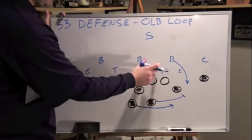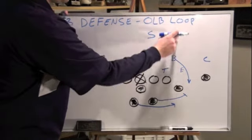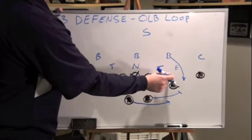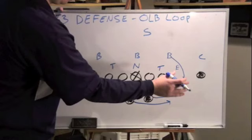Every defender has a gap assignment. Looping means our defensive end and our linebacker are just switching gap assignments to confuse the offense.